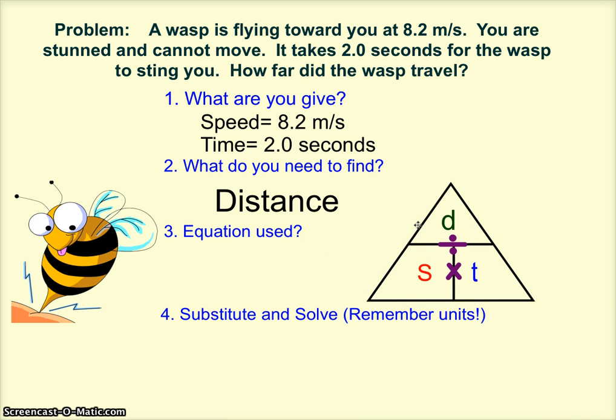Let's look at our equation. Remember, distance is speed times time. So that means we need to multiply. 2 times 8 is 16, 2 times 2 is 4, so it's 16.4.